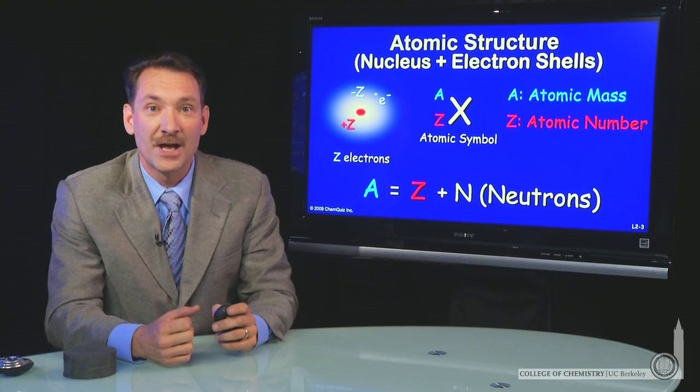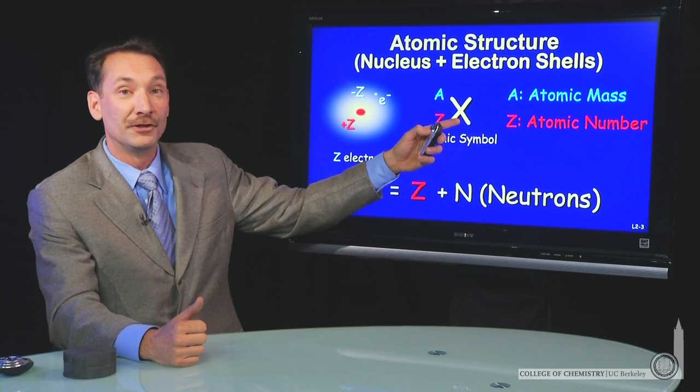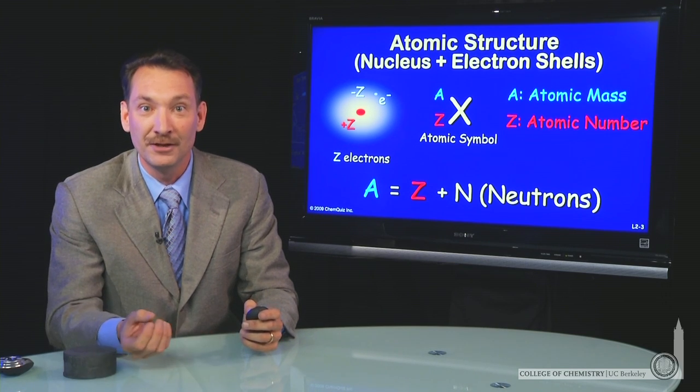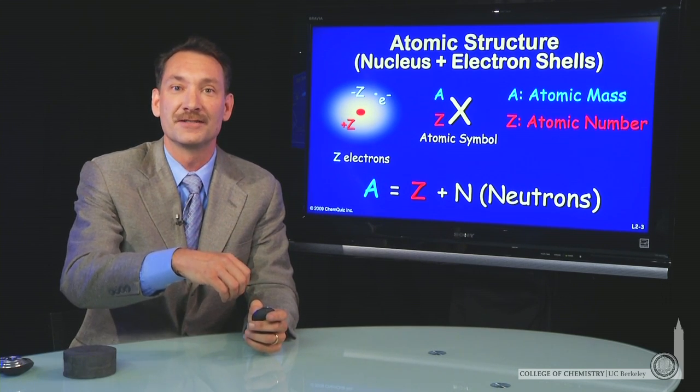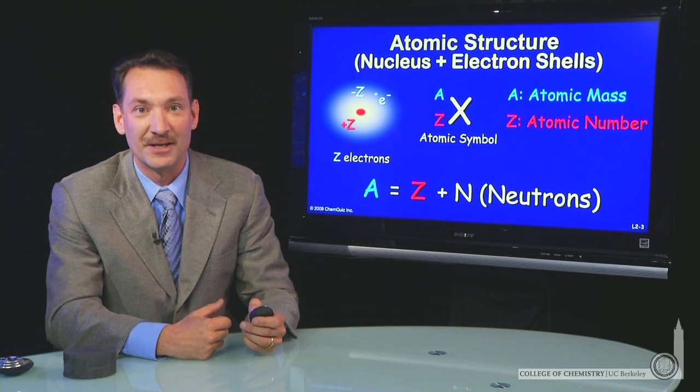The atomic number, we actually often don't write down with a symbol, because the symbol and the atomic number are redundant information. If you know the symbol, you know the number of protons in the nucleus. If you know the number of protons in the nucleus, you know the symbol or the nature of that element.